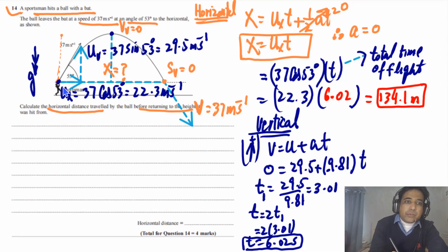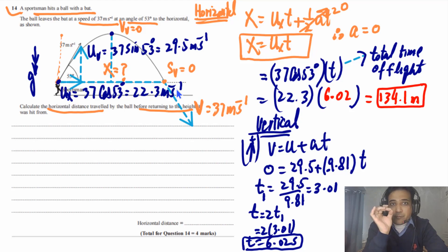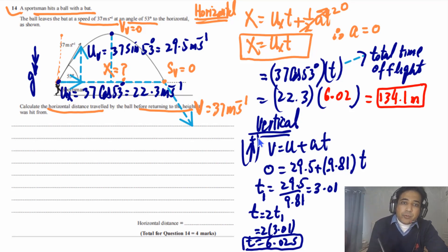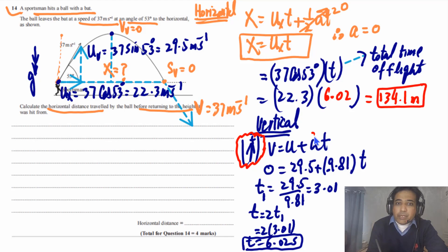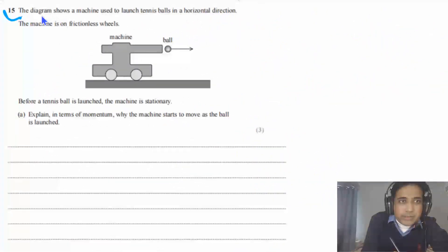This is how you need to answer projectile motion problems. Always write down what information you can get from the given data and the graph, then use the appropriate formula. Be careful with directions — in this case we took upward as positive, so acceleration a is negative.